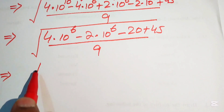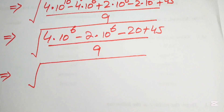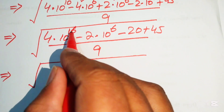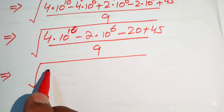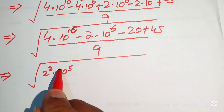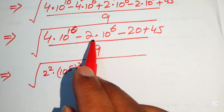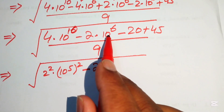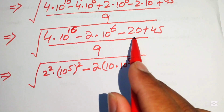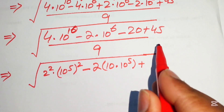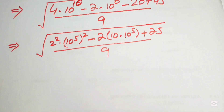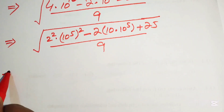We rewrite: 4 × 10^10 = (2)² × (10^5)² = (2 × 10^5)². We break 10^6 as 10 × 10^5. Then −2 × 10 × 10^5 = −20 × 10^5, and 45 − 20 = 25. So we have square root of [(2 × 10^5)² − 2 × (2 × 10^5) × 5 + 25] / 9.